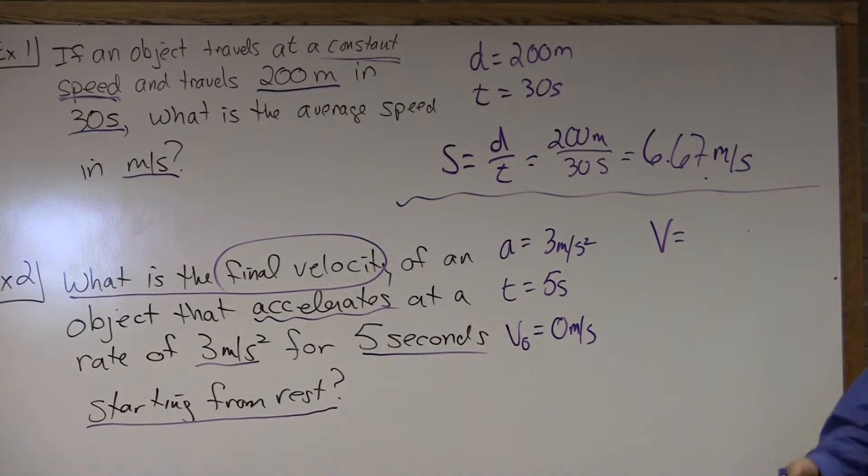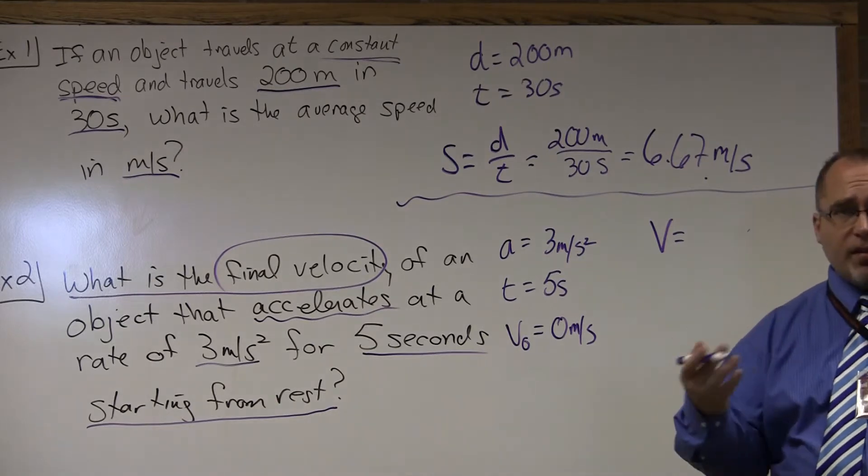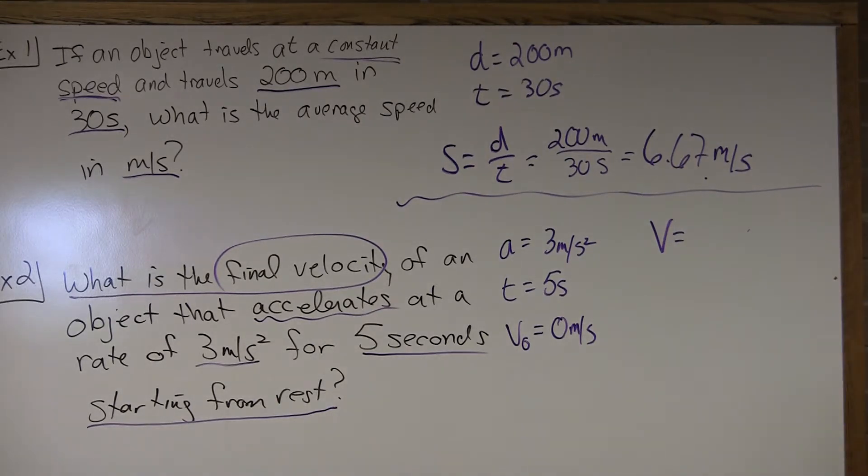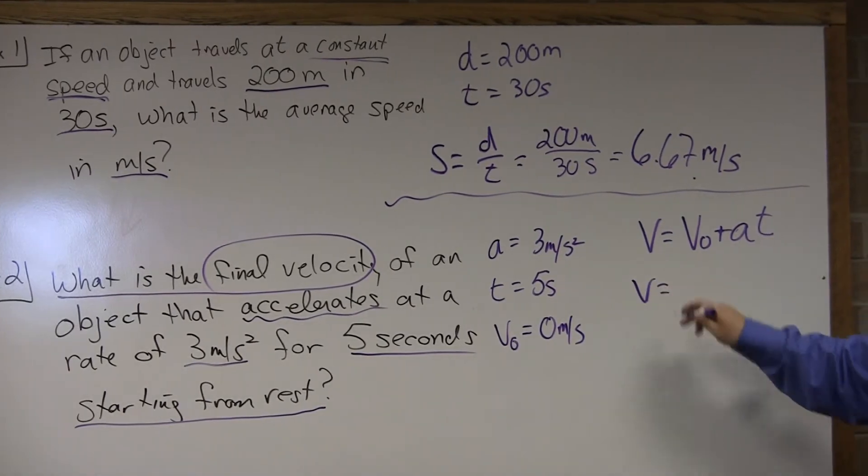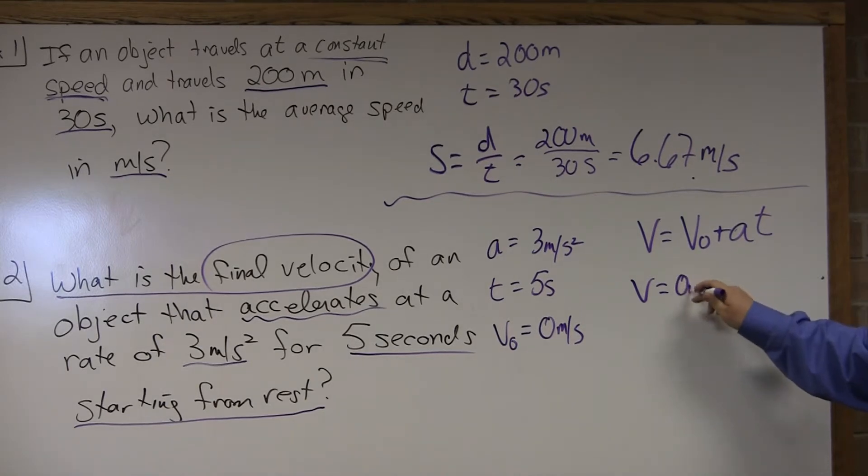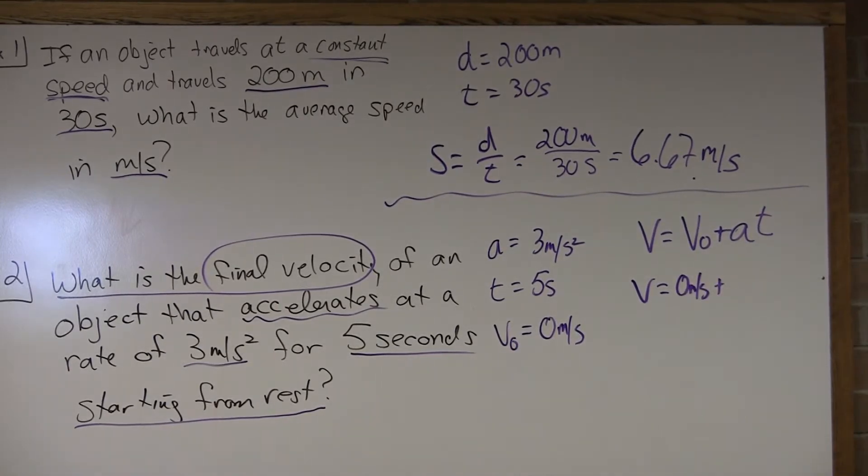And since we have an acceleration, we can't use simply distance by time. We have to use the other formula for velocity. Which is initial velocity plus acceleration times time. So, we have V equal to V sub 0 plus AT. Simply plug in. Your initial velocity of 0 meters per second. Plus your acceleration of 3 meters per second squared. Times your time. 5 seconds.